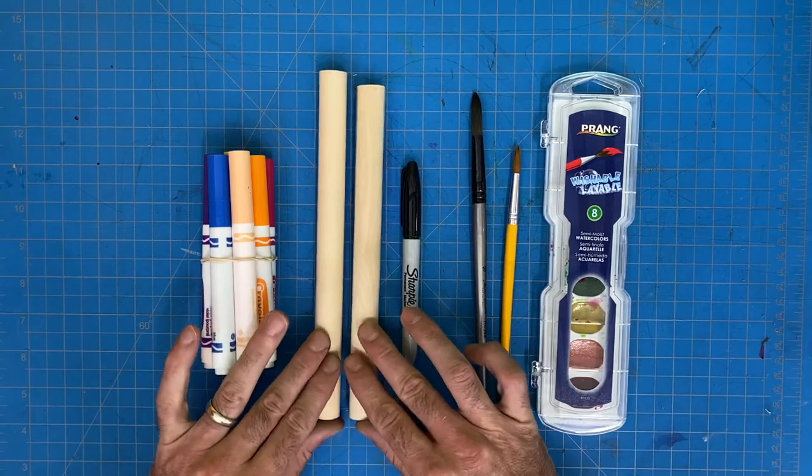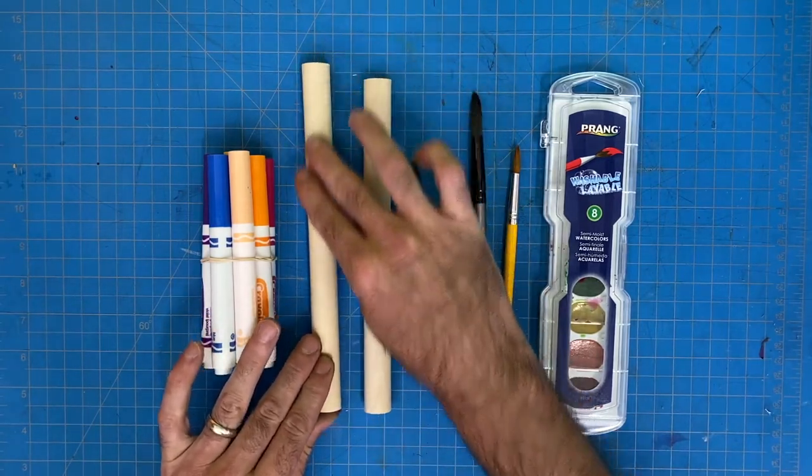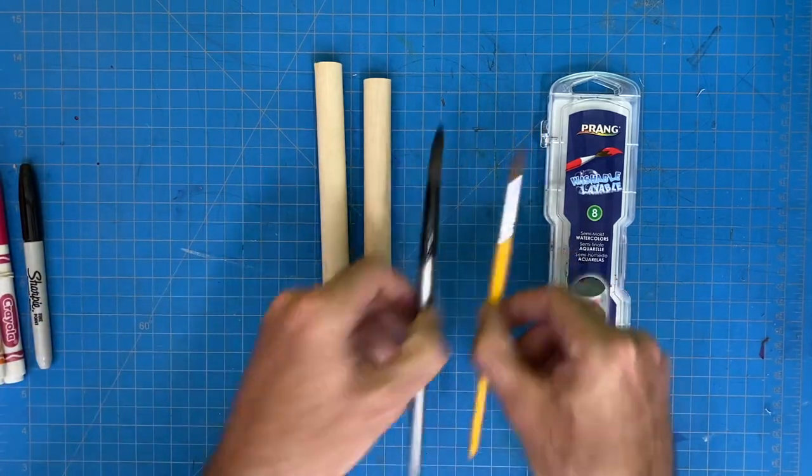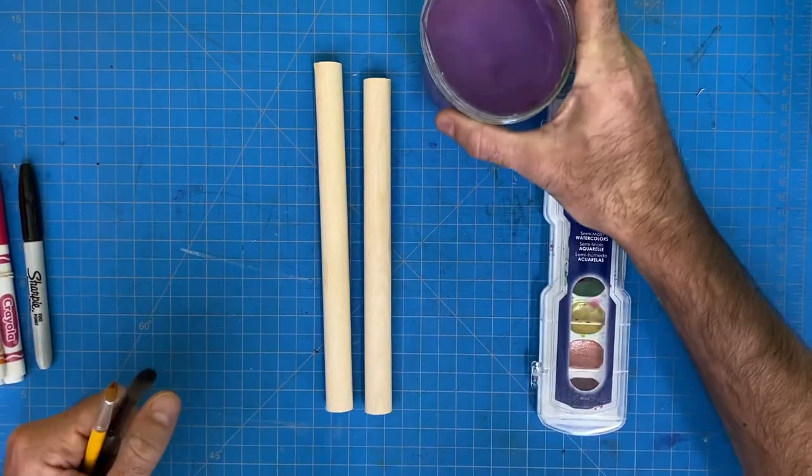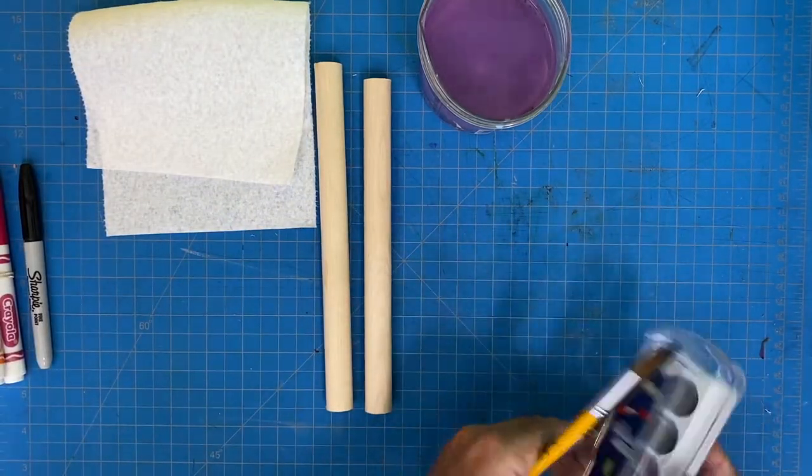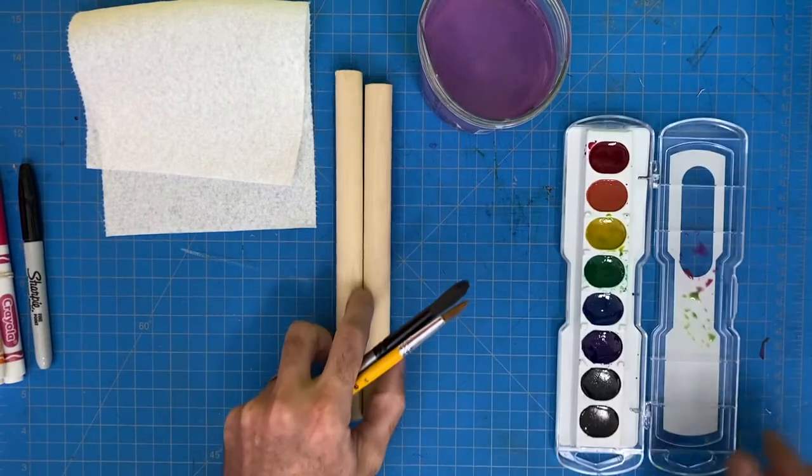So what you're going to do is you're going to watercolor a base layer onto these first. I'll get my water and a paper towel, and I'll figure out how I want to design these.